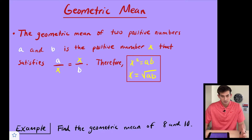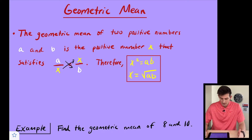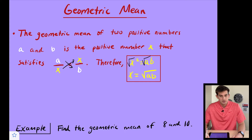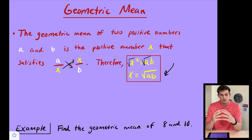Therefore we can write a couple equations here. If we cross multiply, we get X times X, which is X squared, equals A times B. If we simplify and take the square root of both sides, we end up with our most simplified equation for the geometric mean: we just multiply the two numbers together and then take the square root of the product.